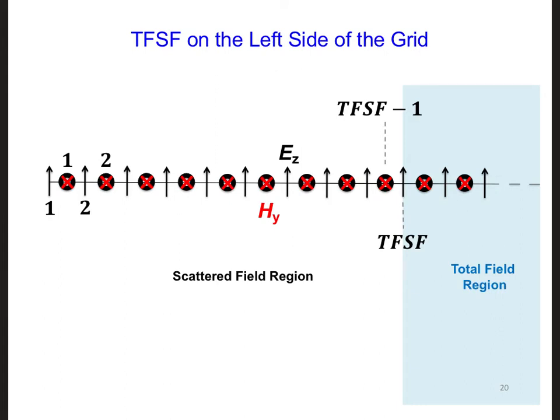Focusing on the left interface between the total and the scattered field regions, let's call the I index of this Ez component right here TFSF. So this is I equal TFSF.